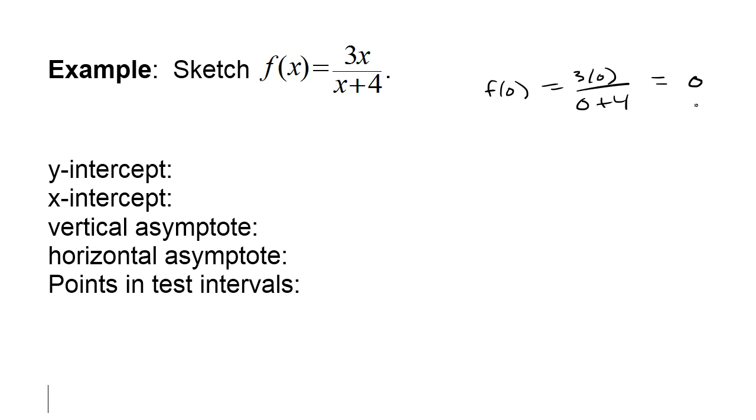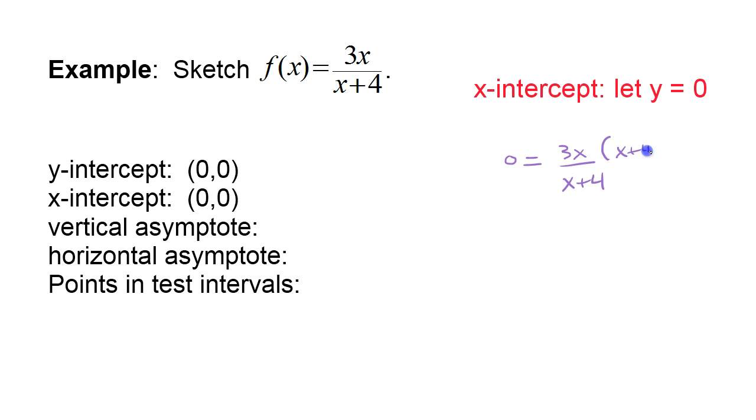That would also be an x-intercept. But let's see if we have any other x-intercepts. To find x-intercepts, we let y be 0. So then I'm solving the equation 0 equals 3x over x plus 4. To solve it algebraically, I could multiply both sides by x plus 4. On the left, I'm just going to get 0, because 0 times anything is 0. And on the right, these cancel, and I have 3x. So the solution is x equals 0.